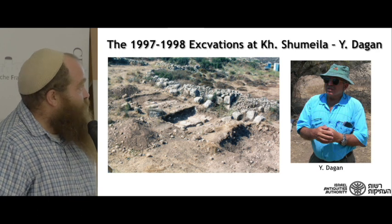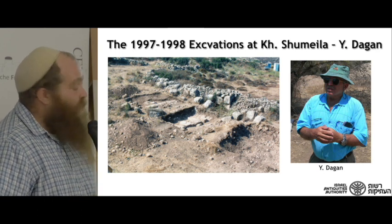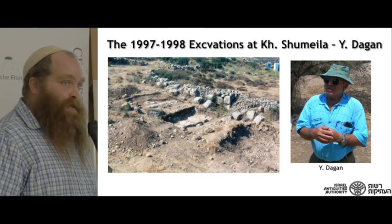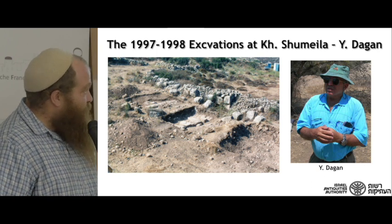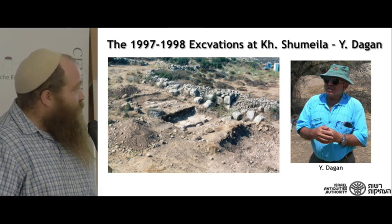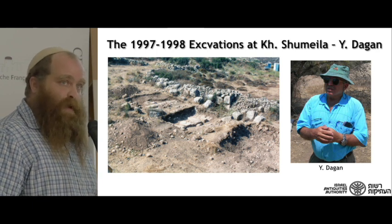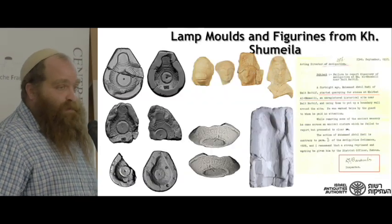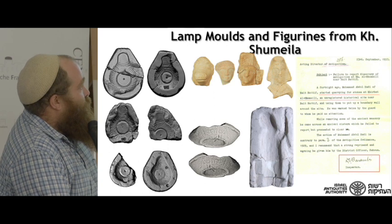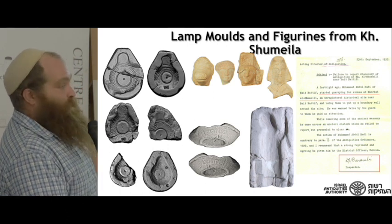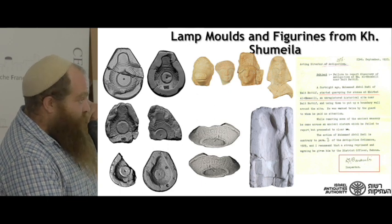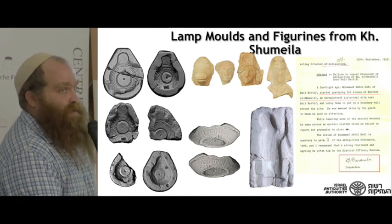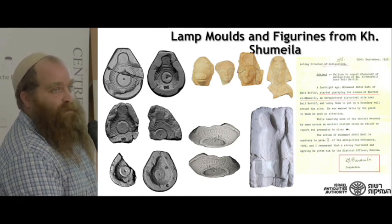Here is a picture of the Yuda Dagan excavations from 1997-1998 — his original documentation found in the Israel Antiquities Authority Scientific Archives, which are by law required for every excavation. The villa was also a lamp workshop. I uncovered 15 limestone molds for lamps of the types found in Beit Natif, along with a number of figurines, and I asked myself: have I found Baramki's site, or did I find something else?